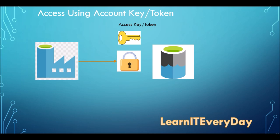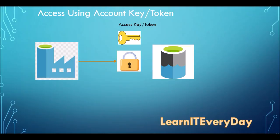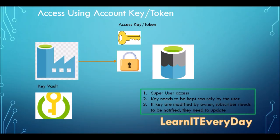If anybody has access to these keys, they can access your lake completely. One way is the lake owner shares the keys with the data factory owner and says, 'I trust you, you can use my keys.' When you share an access key, a user gets super user access — he can update, delete, remove, do anything with the key. This key needs to be kept securely because it's a super user access.